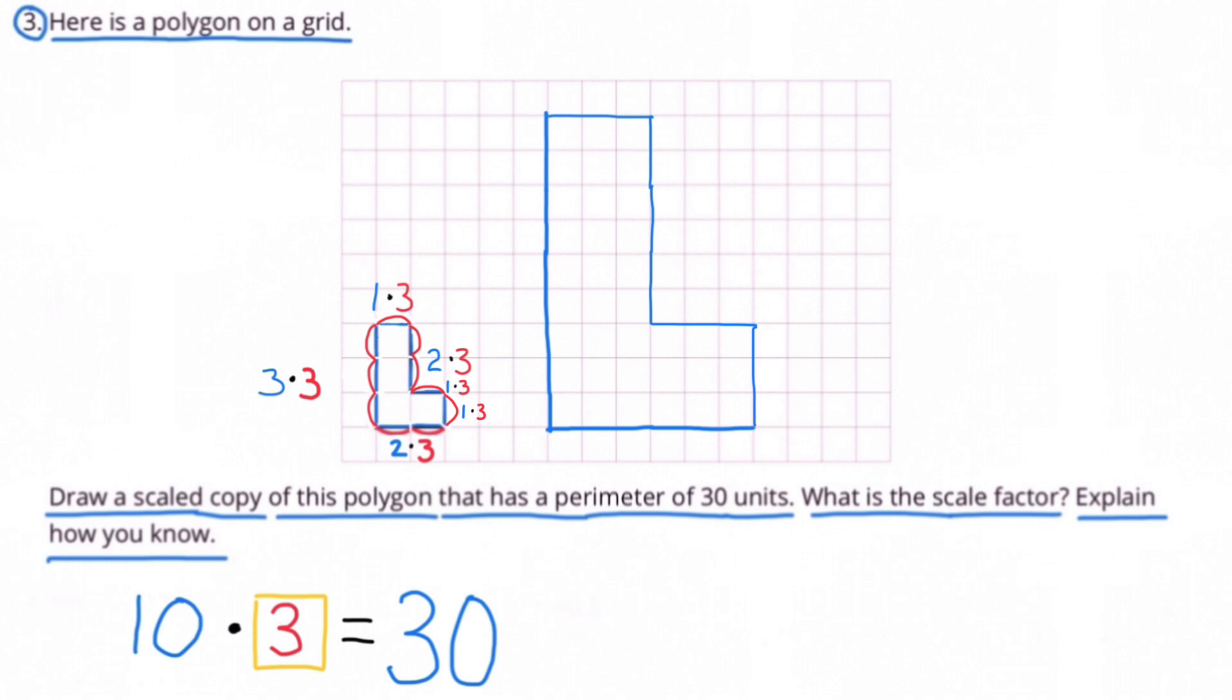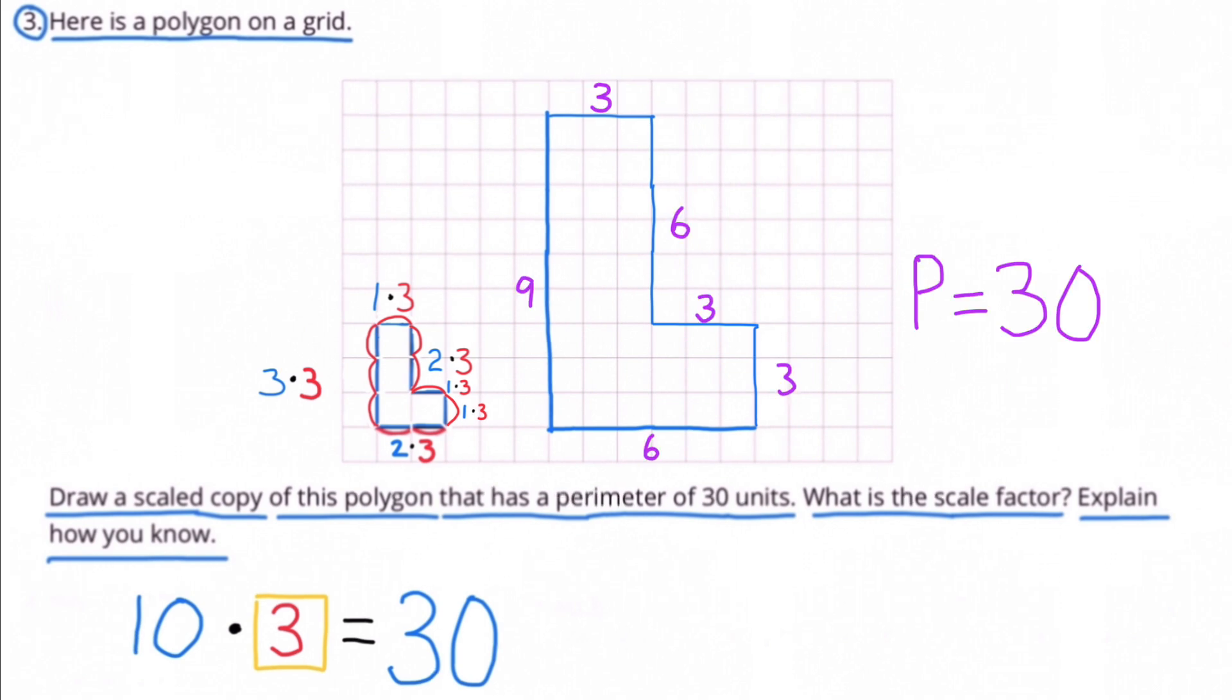1 unit times 3 equals 3 units. And finally, 1 unit times 3 equals 3 units. 6 plus 9 plus 3 plus 6 plus 3 plus 3 equals a perimeter of 30 units.